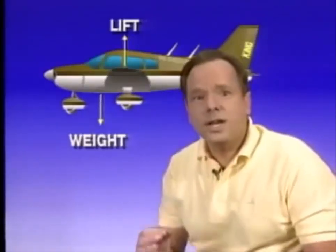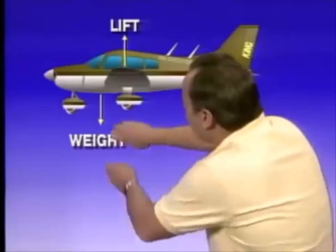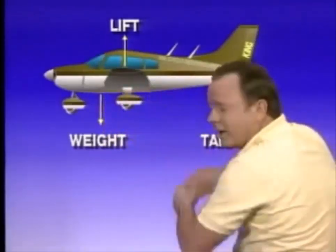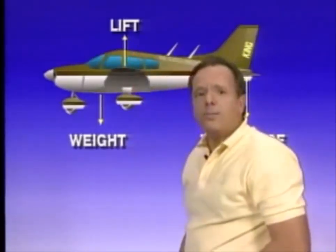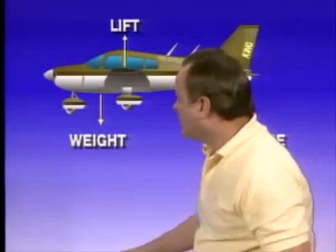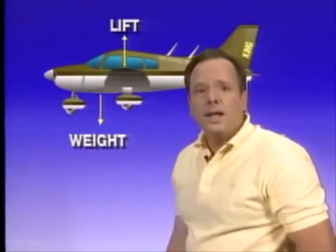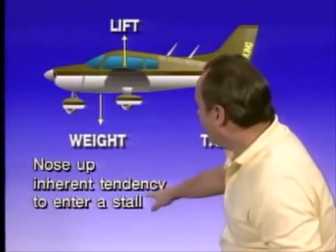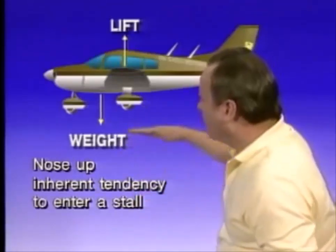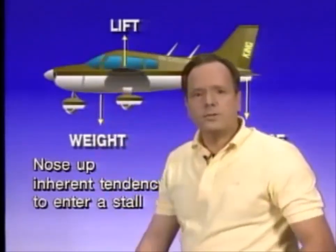If the airplane is loaded with the CG aft of the aft limit, spin and stall recovery may become difficult or impossible, because if the center of gravity is too far aft a flat spin may develop. If you move the center of gravity very far back, past the center of pressure, the aircraft would have an inherent tendency to nose up and an inherent tendency to enter a stall — it would want to keep slowing down and stall itself all the time.